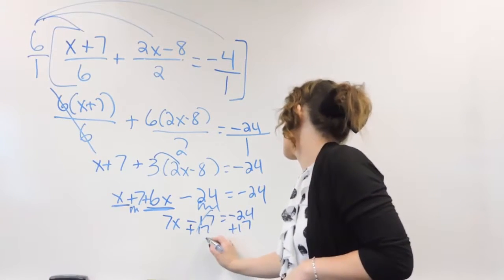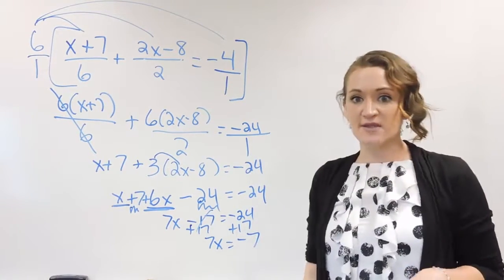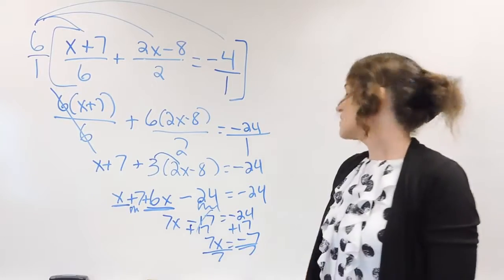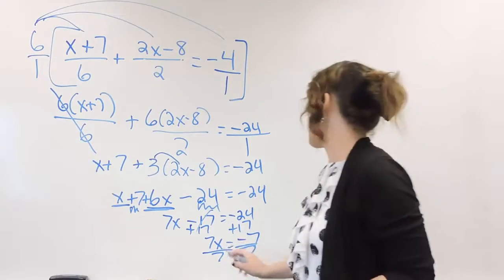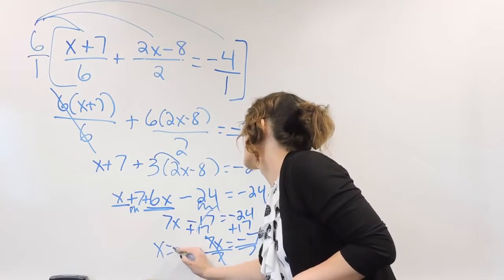17 cancels on the left, and we're left with 7x is equal to, let's see, a negative 7 there. And last step is to divide out the coefficient, so we can divide both sides by 7, leaving us with x is equal to a negative 1 there.